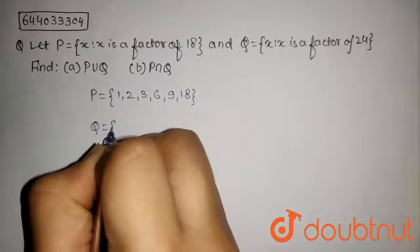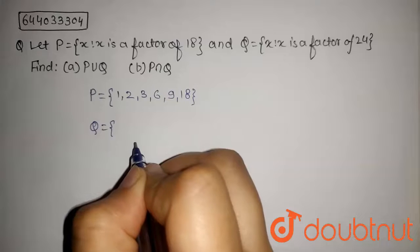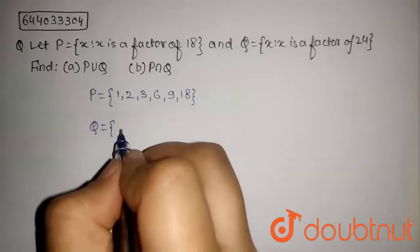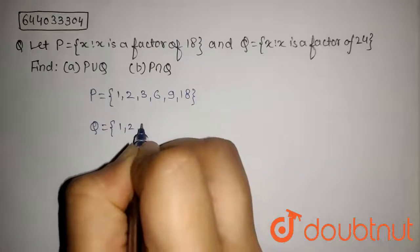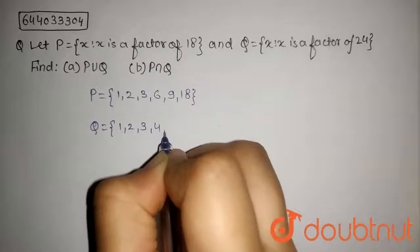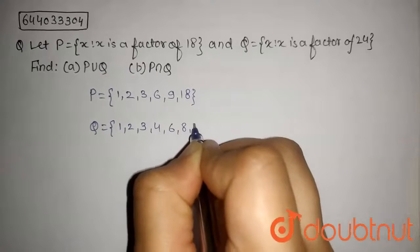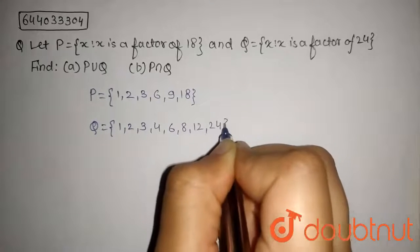Now set Q will contain elements which are factor of 24. So the factors of 24 are 1, 2, 3, 4, 6, 8, 12 and 24.